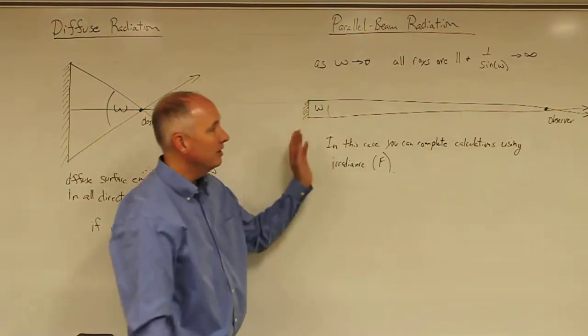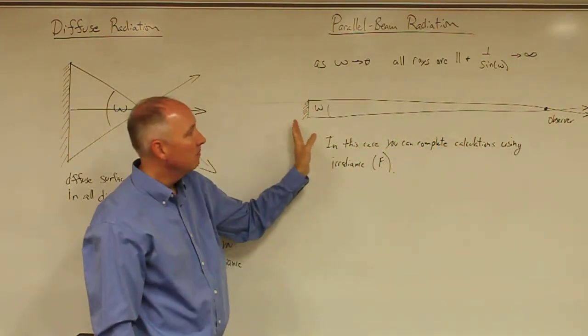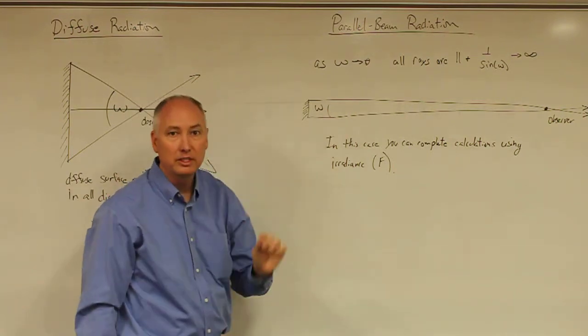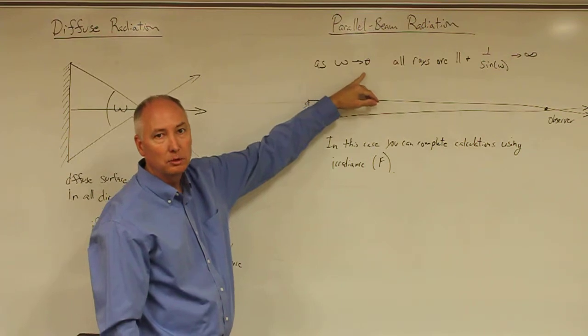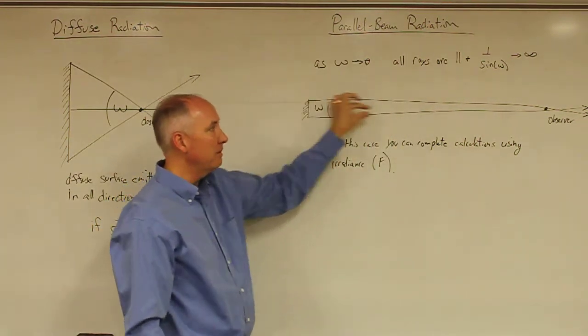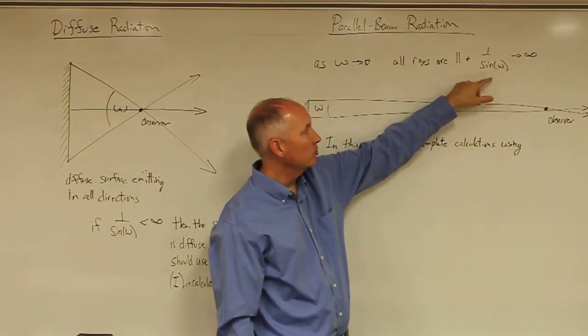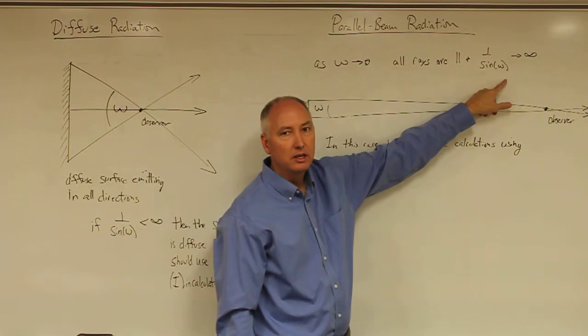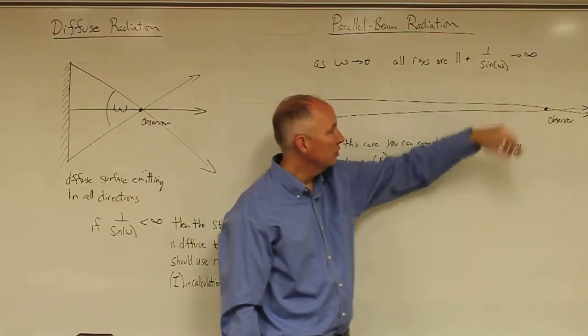On the other hand, if the observer is very far away from the emitting object, the solid angle becomes very, very small, and as the solid angle approaches zero, then all of the rays coming from that object are essentially parallel to one another. Another way to mathematically say that would be that as 1 over the sine of the solid angle goes to infinity.